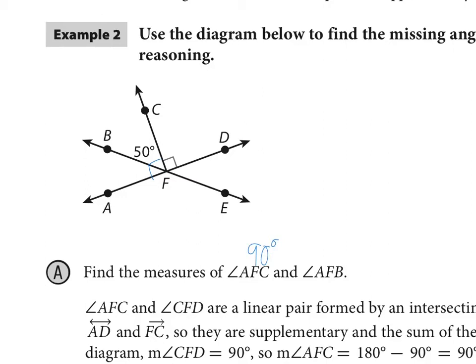Now we want AFB. If we know this whole thing AFC is 90, then with our angle addition postulate we've got this small part plus this small part equals the big angle and we know the big angle is 90, so that's just going to be 90 minus the 50 that we already have or 40 degrees. So it might have looked like a complicated diagram to begin with but it's really not.